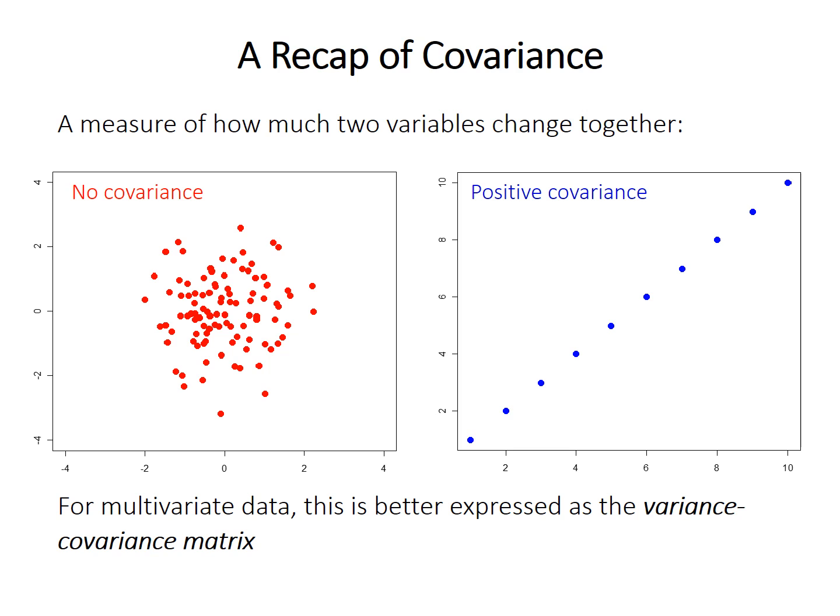We talked about it before, but as a brief recap, it's a measure of how much two variables change together. As one increases, does the other also increase? When we're talking about multivariate data, we need to talk about something called the variance-covariance matrix.